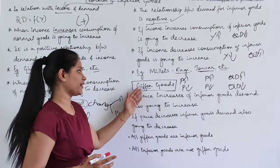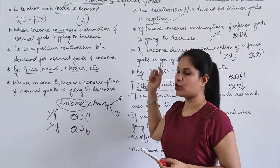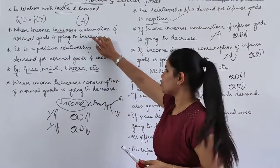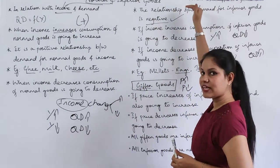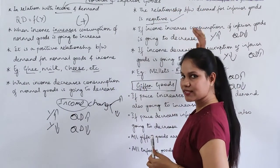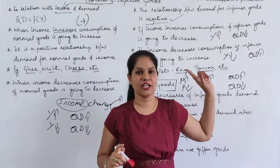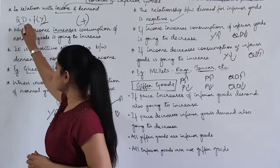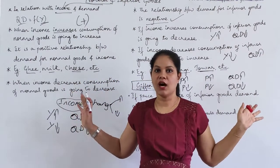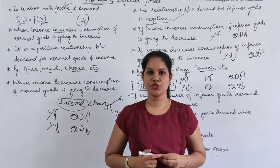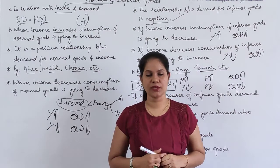So I hope you understood the difference between normal goods and inferior goods, and how both react to income. Normal goods show a positive relationship — income increases, consumption increases; income decreases, consumption decreases. Inferior goods show a negative relationship — income increases, consumption decreases; income decreases, consumption increases. Thank you so much. I will meet you in the next class on complementary goods and substitute goods.